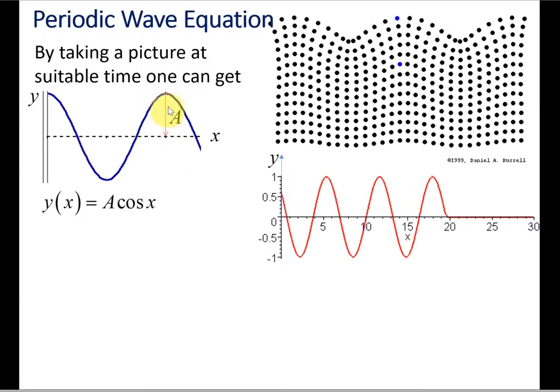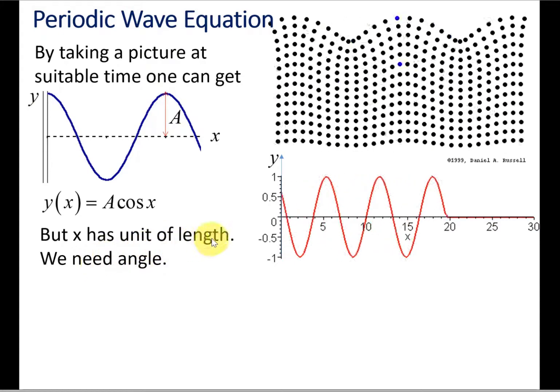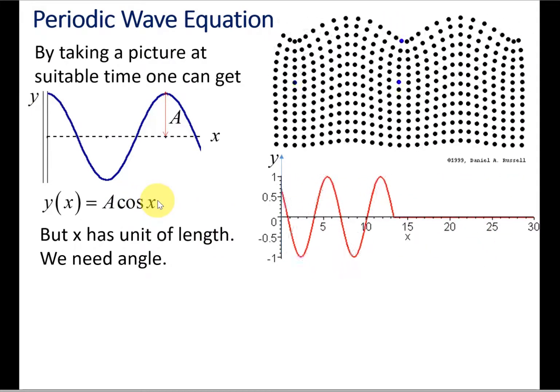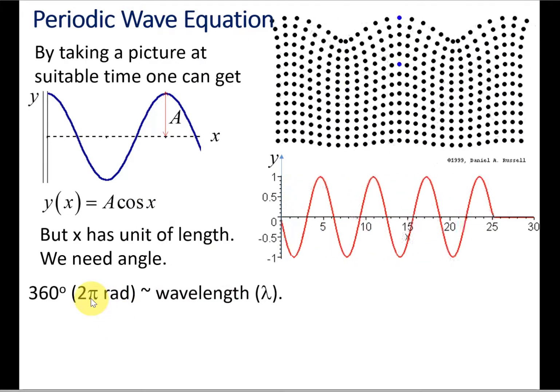Since we took this snapshot when it was maximum at x equals zero position, this is a cosine function. The maximum oscillation from the mean position is amplitude. But x has units of length, and usually when we use cosine and sine functions, we're writing that in terms of angle in radians.